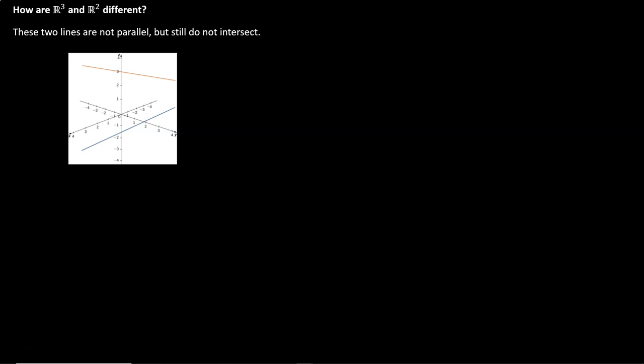Some things in three dimensions work very similar to the way things were in two dimensions, but some things are different. So let's take a moment to appreciate a few of the differences we might not have thought about on our own. For example, in two dimensions we know parallel lines never intersect, so if you have two lines that don't intersect, guaranteed they're parallel. Not in 3D.